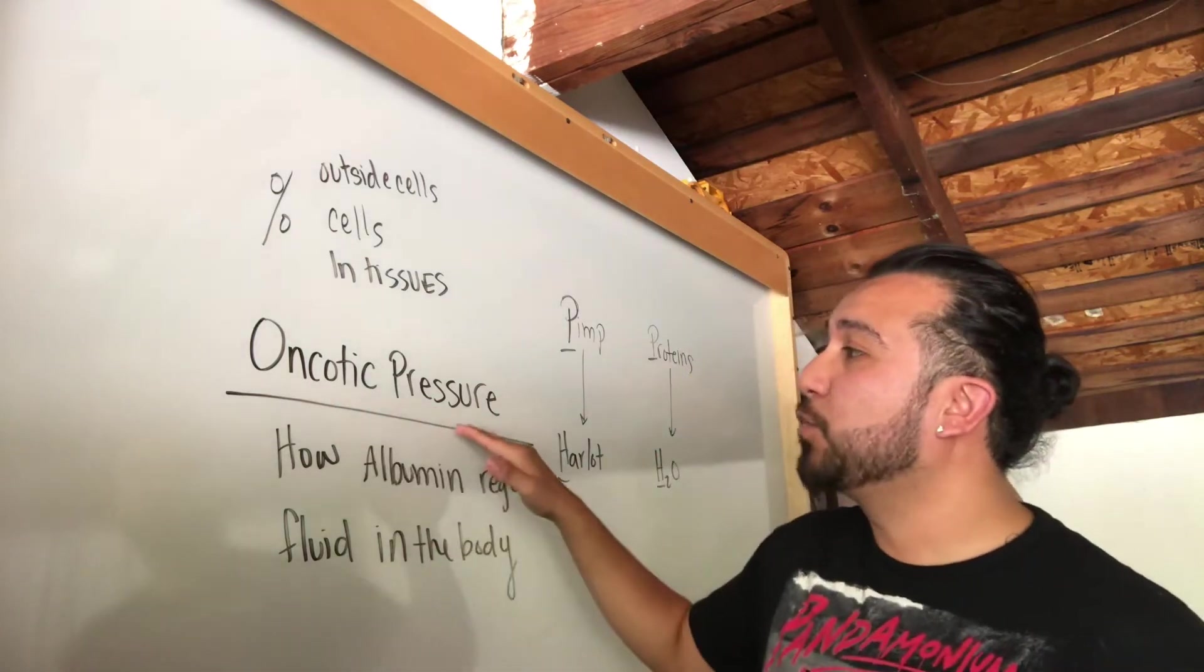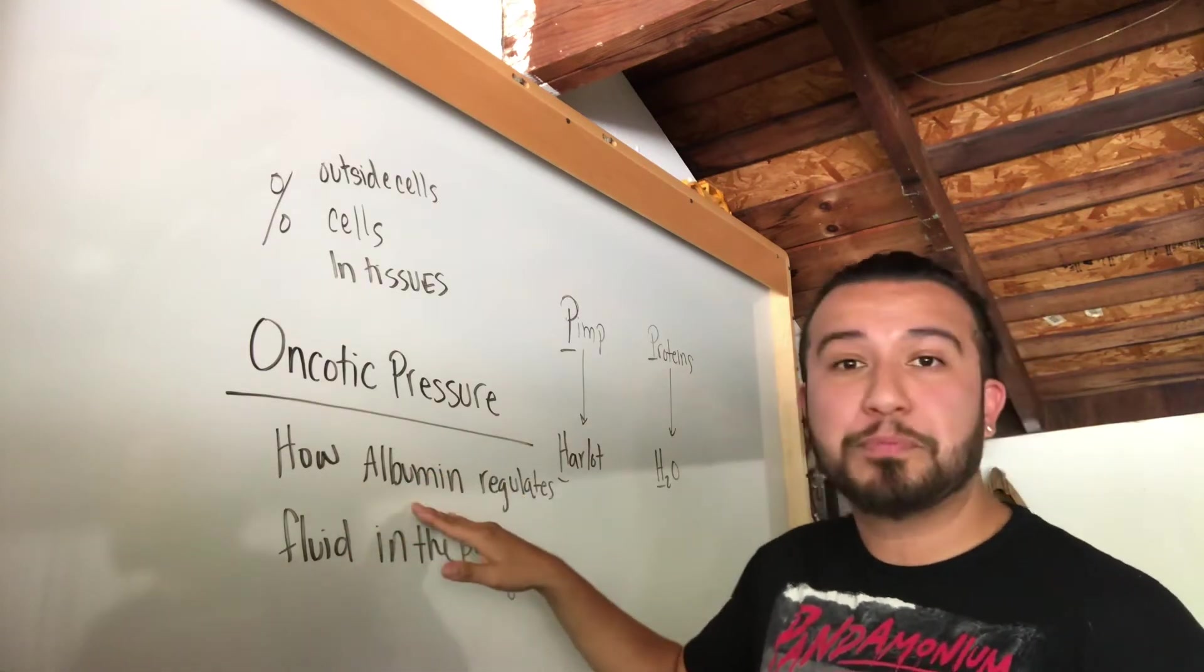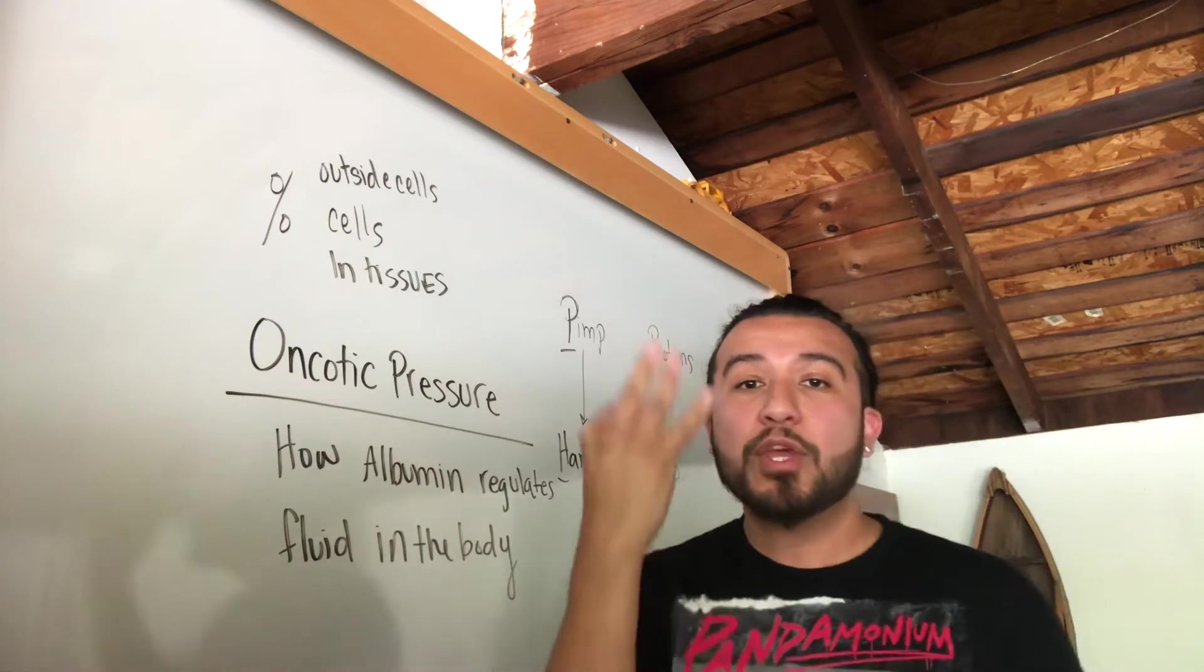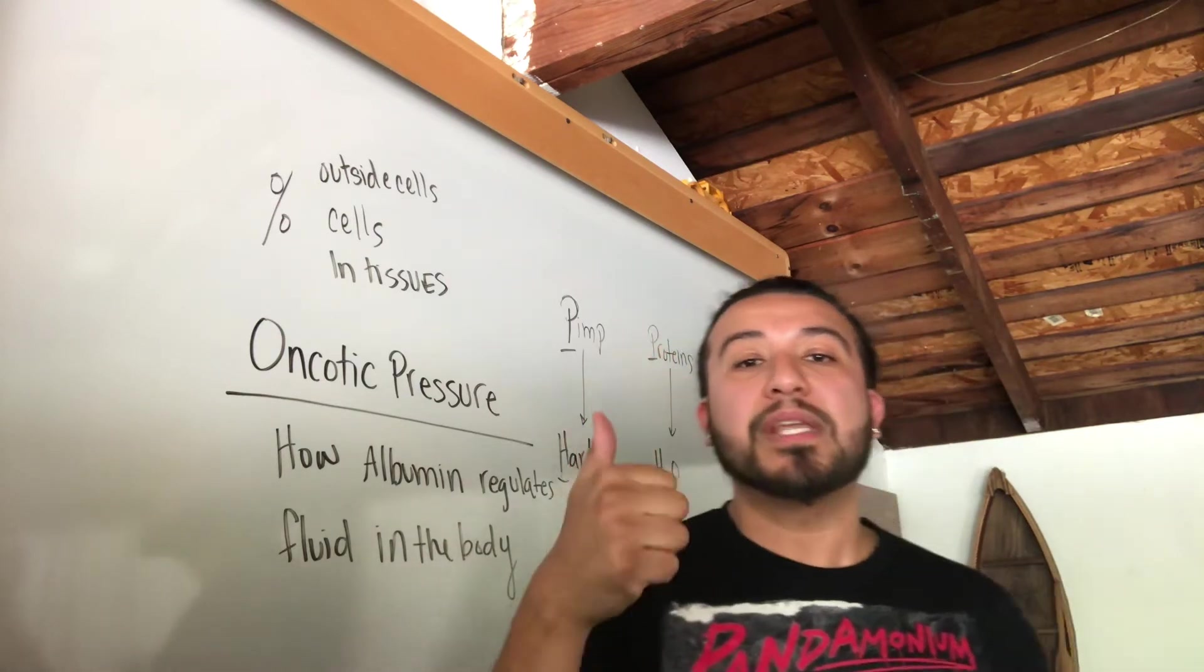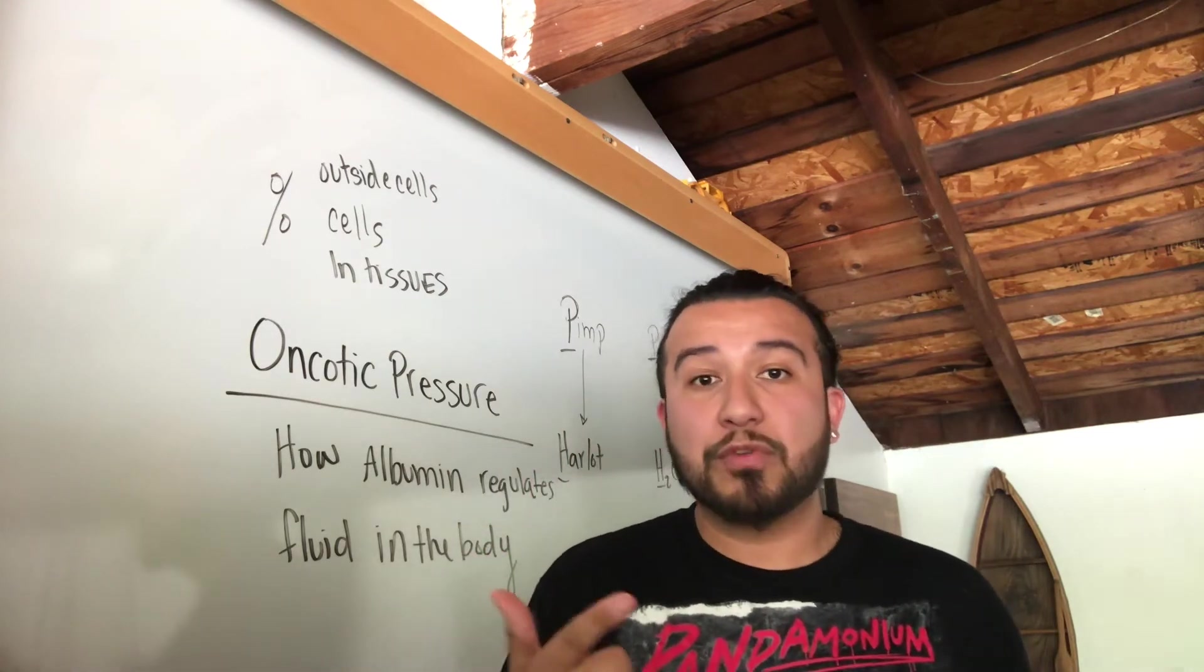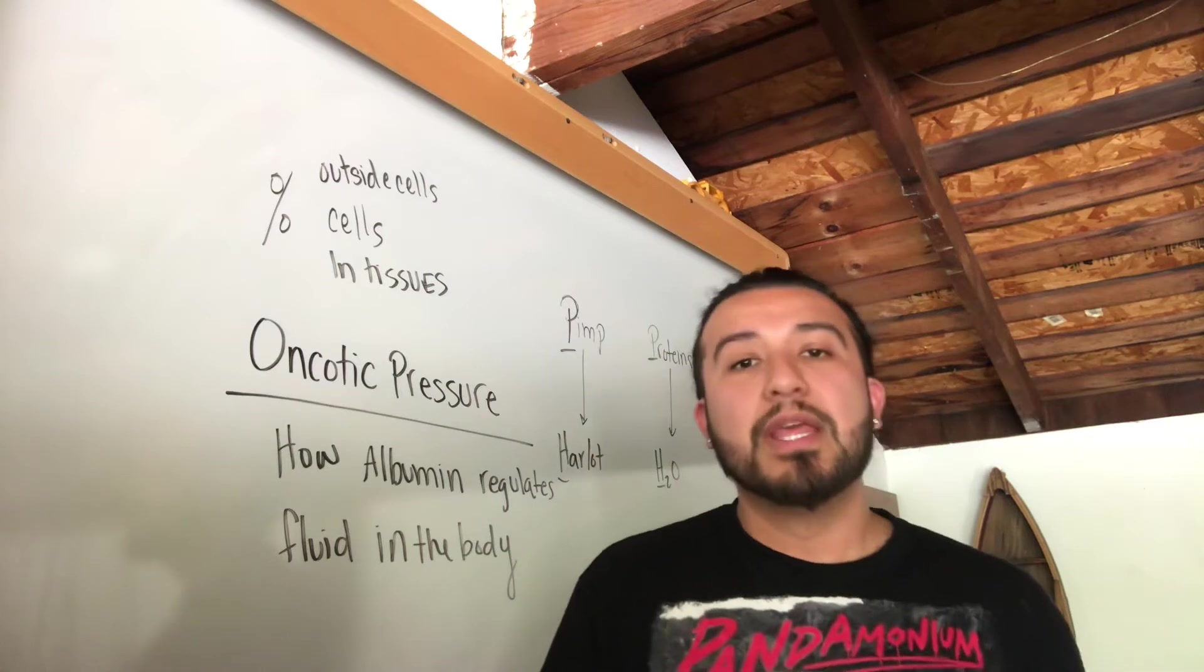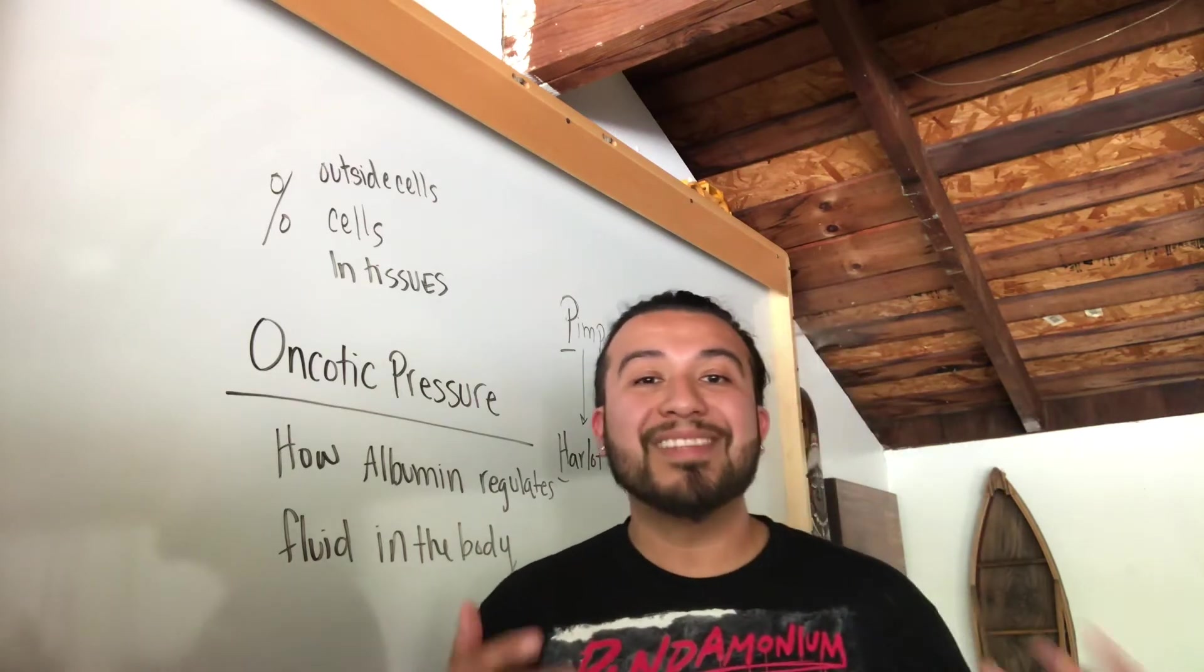Oncotic pressure deals with how the body regulates fluid, in particular how albumin or protein regulates fluid inside the body. We have three major compartments. We have the compartment inside the cell, the intracellular compartment, the extracellular compartment which is also the intravascular because it's still outside the cell. There's fluid also there and then we also have the interstitial compartments which are inside the tissues.